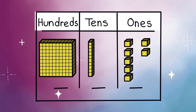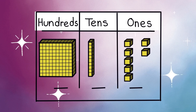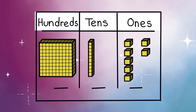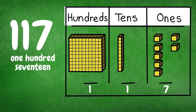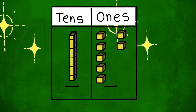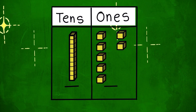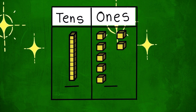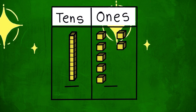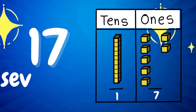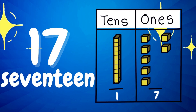Next number. It has one hundred block, one tenths, and seven ones. It is a hundred and seventeen! Next number. It has two digits: one tenths and seven ones. It is number seventeen!